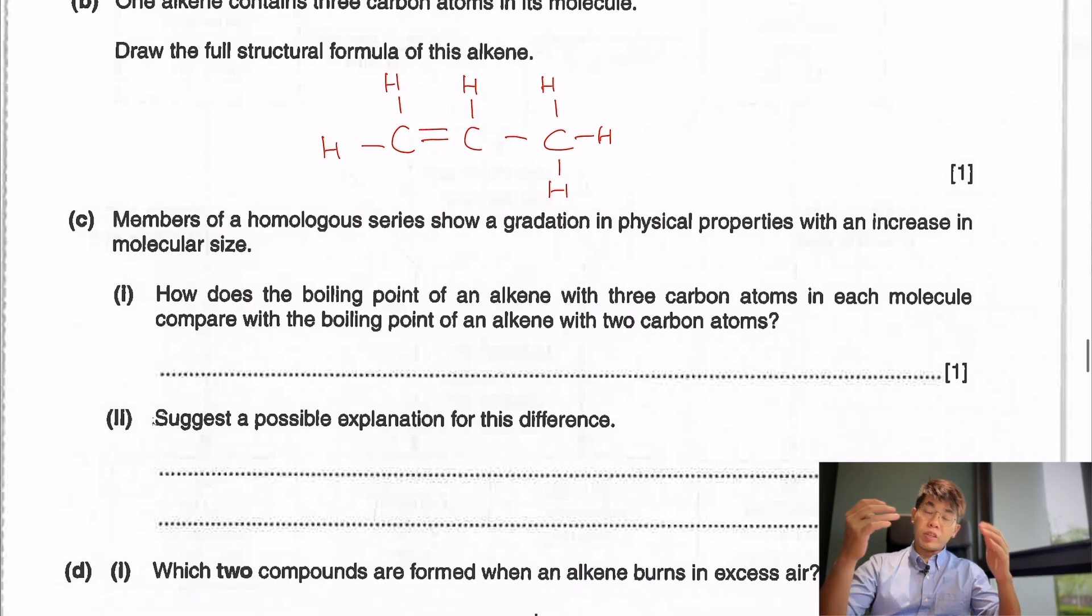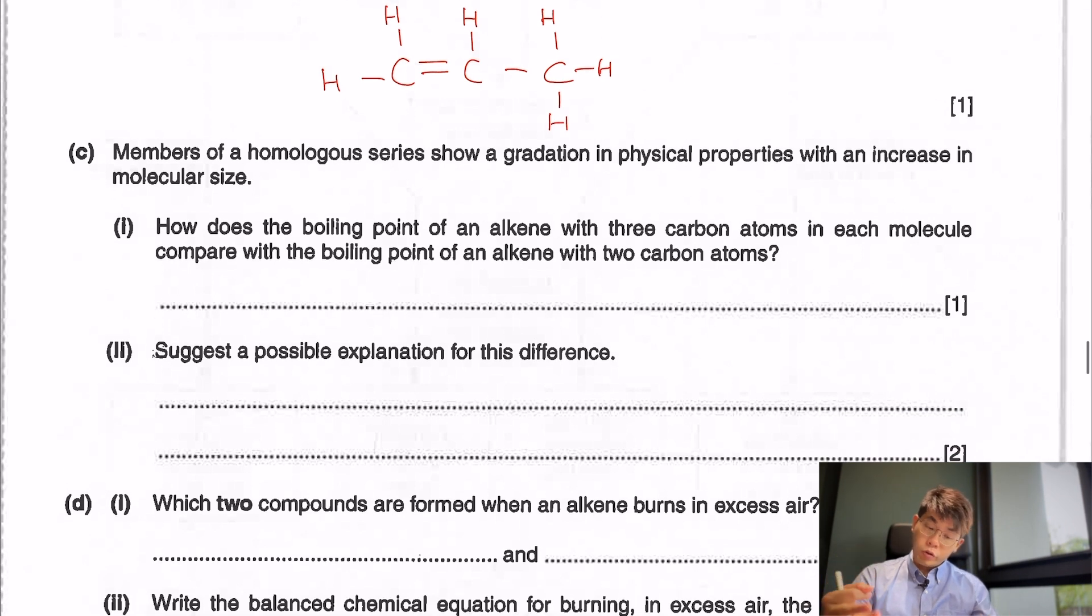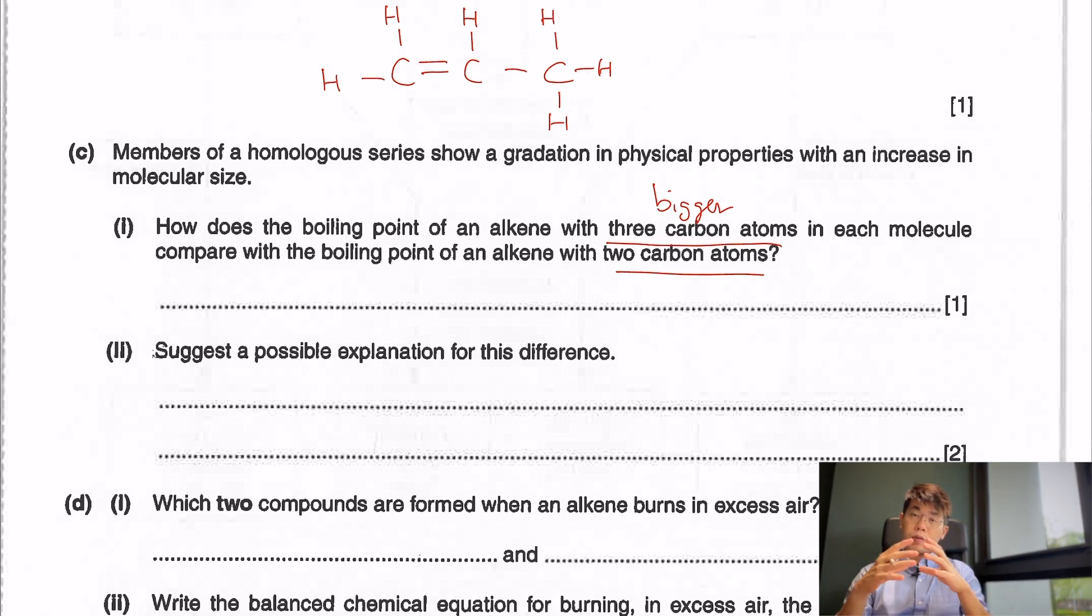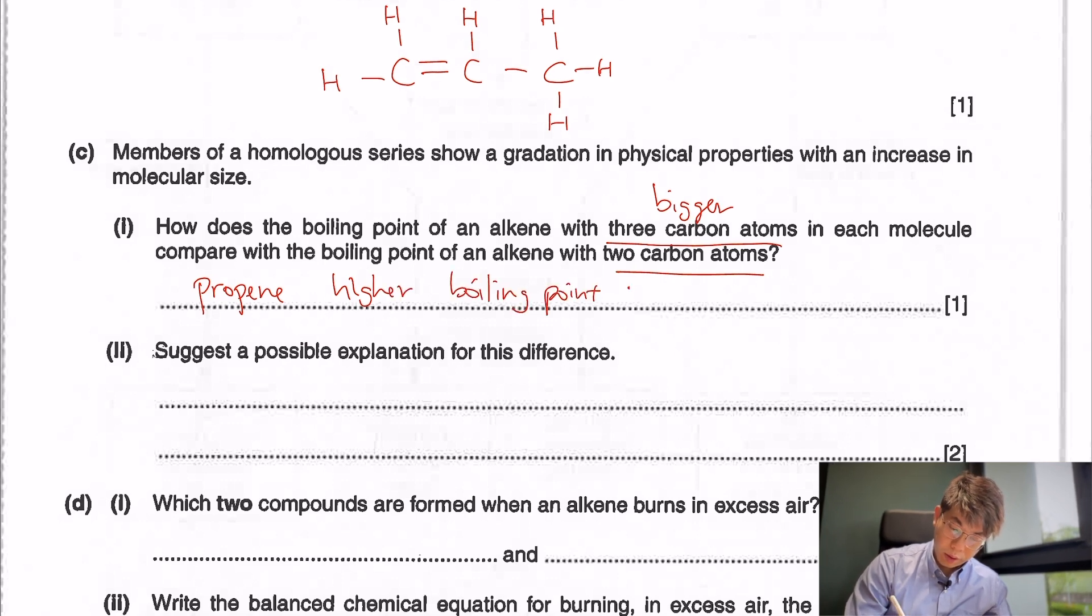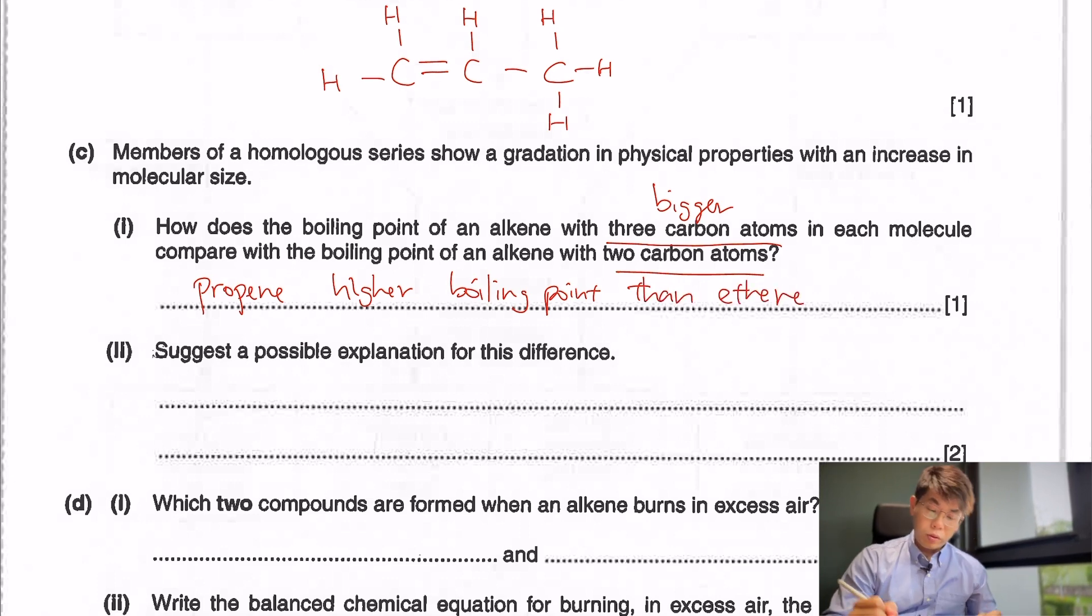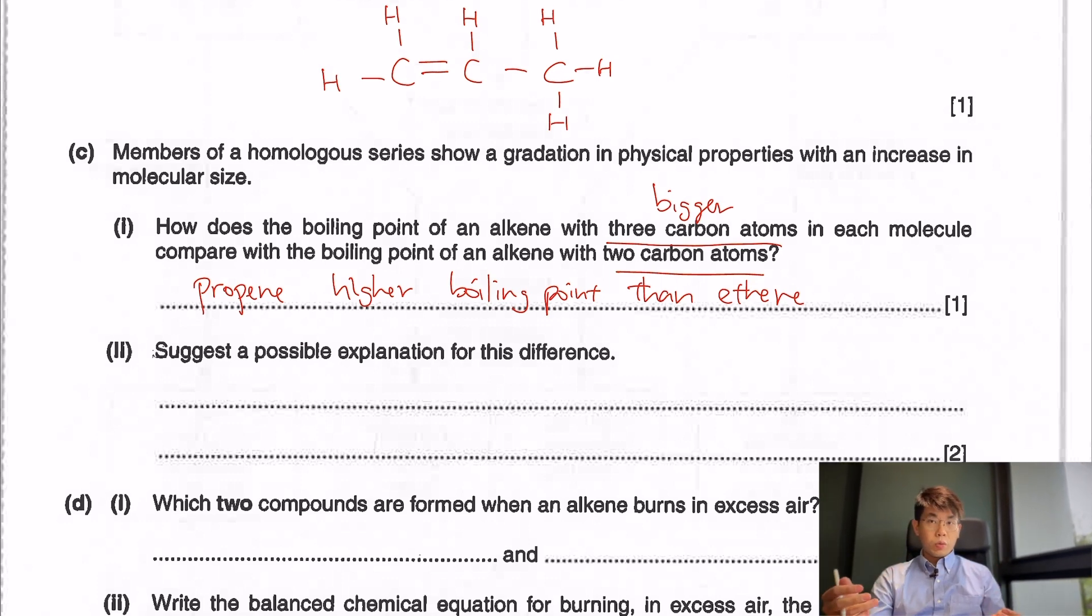Now members of a homologous series show a gradation - that means a gradual change in physical properties with the molecular size getting bigger. How does the boiling point with three carbon atoms compare to boiling point with two carbon atoms? Three carbon atoms is bigger while two carbon atoms is smaller. So the boiling point of a bigger molecule would be higher. Propene has a higher boiling point than ethene.